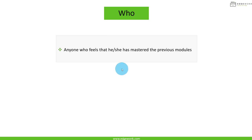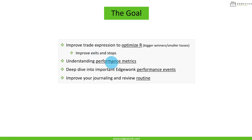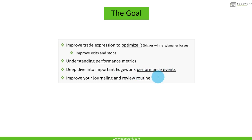Now we're going to get into more advanced concepts. The goal of this video is to help you improve trade expression — we want to optimize our reward-to-risk ratio, which means bigger winning trades and smaller losing trades. We want to do that by improving our exits and stops. We're also going to take a deep dive into performance metrics, and into the important Edgewonk performance events, and I'll show you how to create a journaling and review routine based on that.